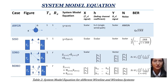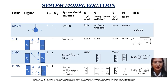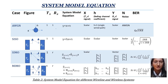Let us explore the significance of multi-antenna systems in overcoming these challenges. The system model equation gives the relation between the transmitted signal, the wireless channel, and the received signal. Here, the system model equation for four configurations — AWGN, SISO, SIMO, and MIMO — is given.